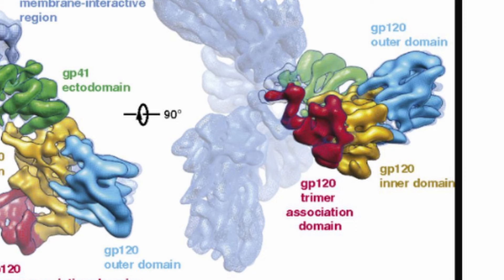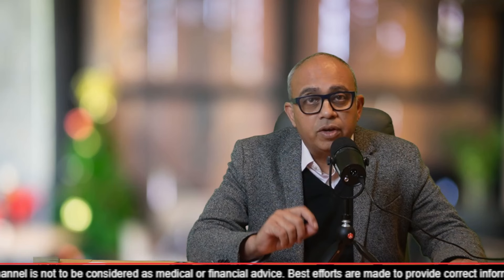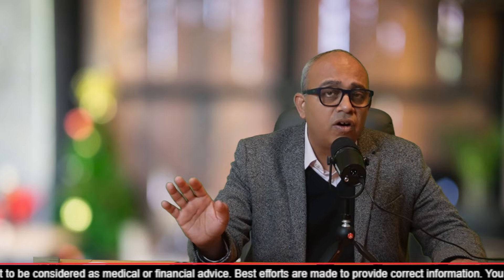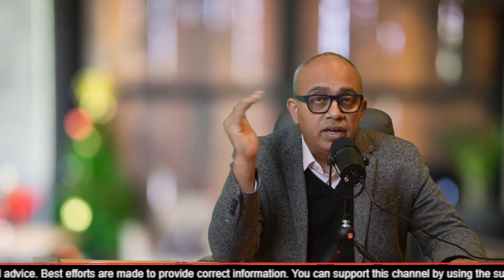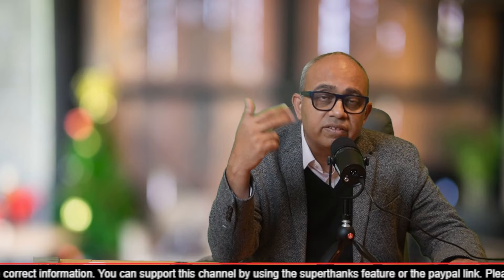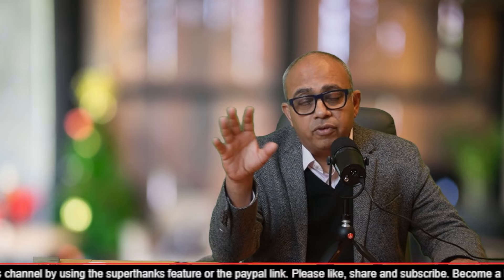Co-receptor binding is the next concept to understand. While GP120's interaction with CD4 is critical, it is not the sole determinant of cell entry for HIV. HIV also requires co-receptors to gain entry into the host cell. The specific co-receptor utilized depends on factors like the viral strain and the stage of infection. In the initial stage, HIV uses the CCR5 co-receptor; at a later stage, it uses the CXCR4 co-receptor. There are various other methodologies used by other strains of HIV, so that is a separate topic for a separate video.